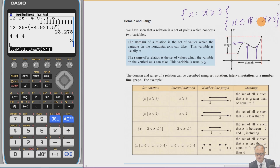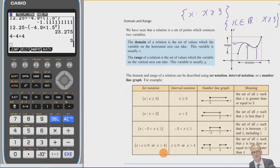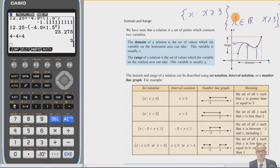That tells us what type of numbers go into our domain. On this course, the numbers in domains are nearly always real numbers. Other types include integers (whole numbers, positive and negative), natural numbers (counting numbers 1, 2, 3…), and rational numbers (anything writable as a fraction). But you'll almost always see x as a member of the reals.